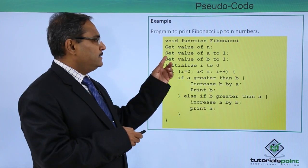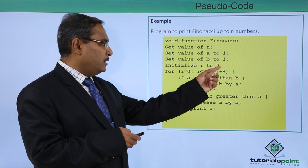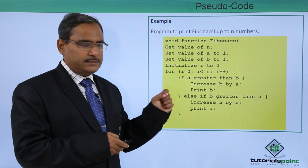Get the value of n and then set the value of a to 1 and set the value of b to 1. Initialize i to 0. So a is 1, b is 1, i is 0.